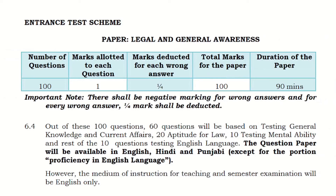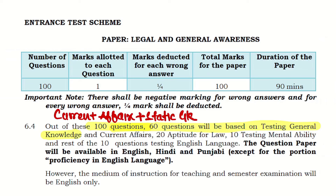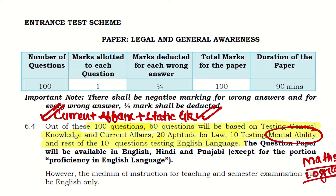The entrance test scheme covers legal and general awareness. There will be 100 questions total. 60 questions are based on general knowledge and current affairs — current affairs and static GK are both very important, and over the years current affairs has become increasingly important. 20 marks are for legal aptitude. 10 marks are for mental ability, which includes logical reasoning. English is 10 marks. The language of the paper will be English, Hindi, and Punjabi.